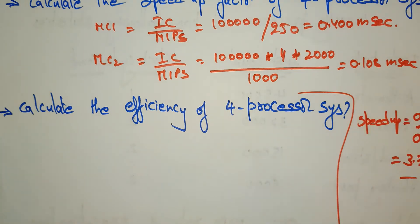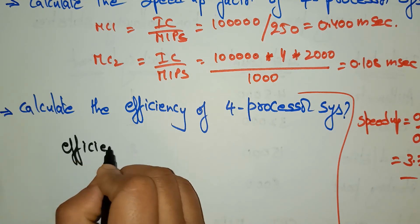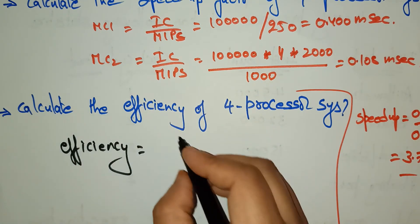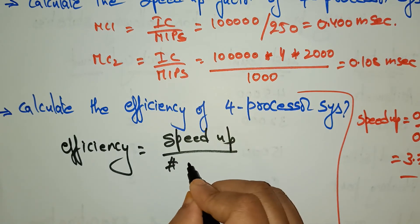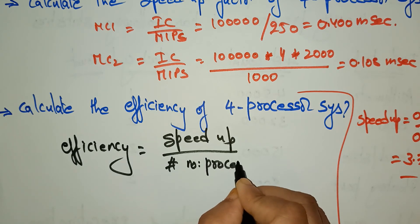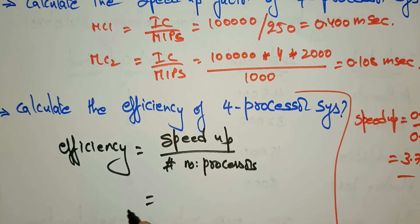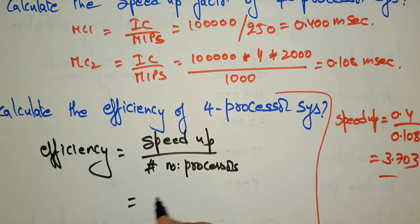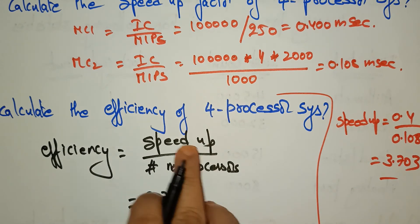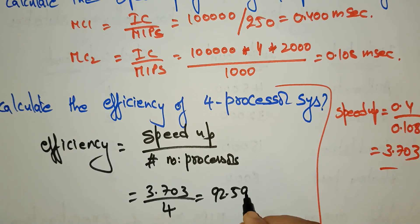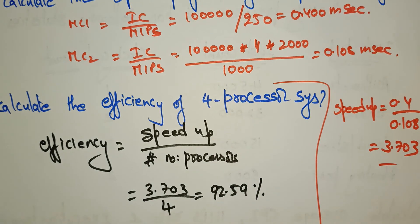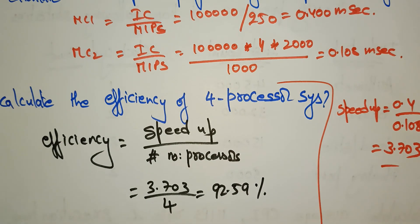Now calculate the efficiency of the 4-processor system. Efficiency equals speed-up divided by number of processors. Speed-up is 3.703 and there are 4 processors, giving efficiency = 3.703 / 4 = 92.59%. So the efficiency of the 4-processor system is 92.59%.